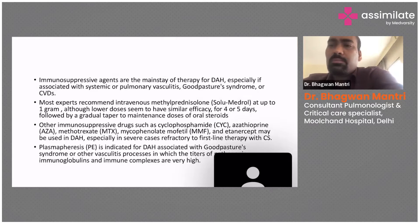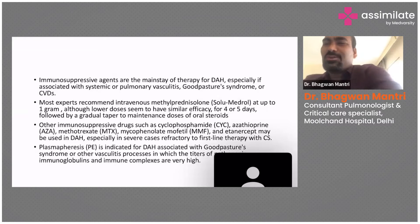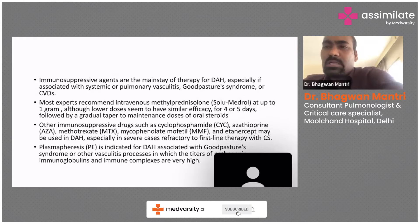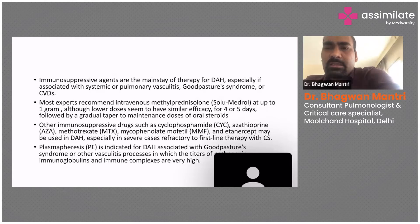Whenever we diagnose DAH, pulse therapy is the very important first step. In pulse therapy, we normally prescribe methylprednisolone, which comes with the name Solumedrol — the same drug used widely in COVID — but here we give it as 500mg to 1g. If we are very sure the patient has DAH, we can give 1g; if we are just suspecting, we may start with 250mg or 500mg.